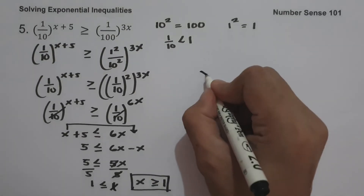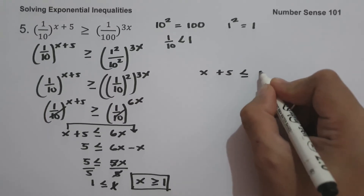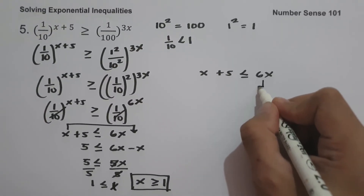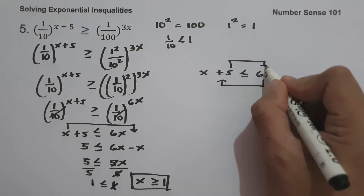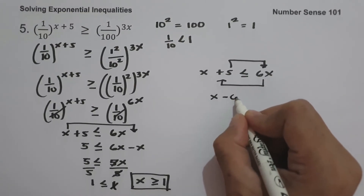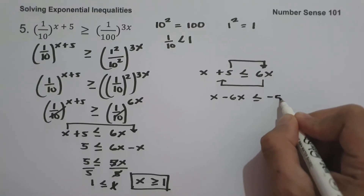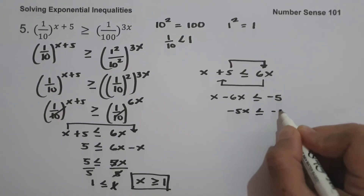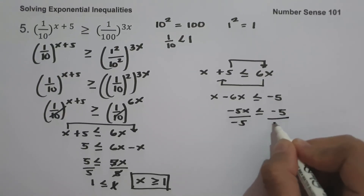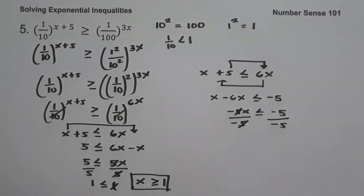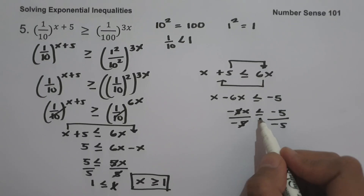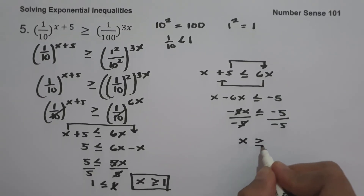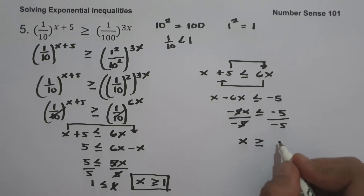Another solution: from x plus 5 less than or equal to 6x, move 6x to the left and 5 to the right, giving x minus 6x less than or equal to negative 5, which is negative 5x less than or equal to negative 5. Dividing both sides by negative 5 reverses the inequality from less than or equal to, to greater than or equal to. So x is greater than or equal to negative 5 divided by negative 5, which is 1.